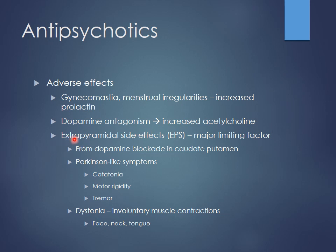EPS is related to how potent these drugs are at blocking dopamine versus other receptors. First-generation agents are kind of 'dirty' — they affect lots of different receptor types, similar to the tricyclics. The more potent the dopamine blockade, the more likely you are to see EPS symptoms. This is mainly from dopamine blockade in the caudate putamen. Patients will have motor rigidity, tremor, and acetylcholine-mediated effects. Catatonia can occur in some cases.